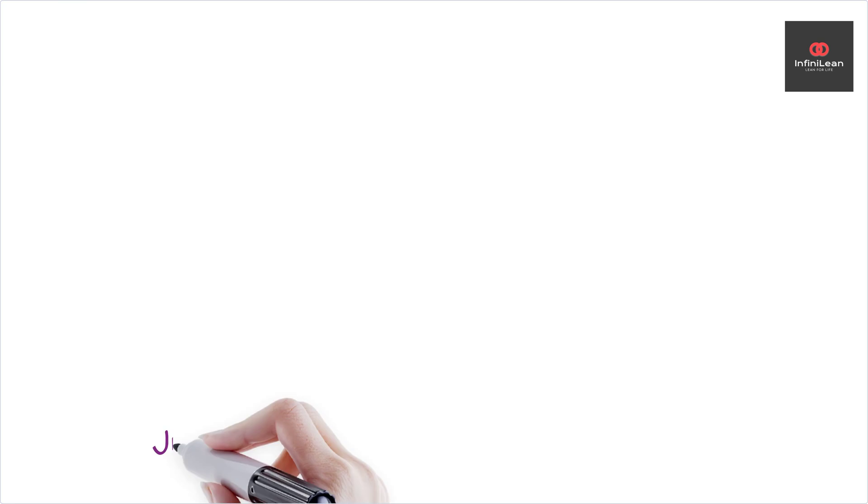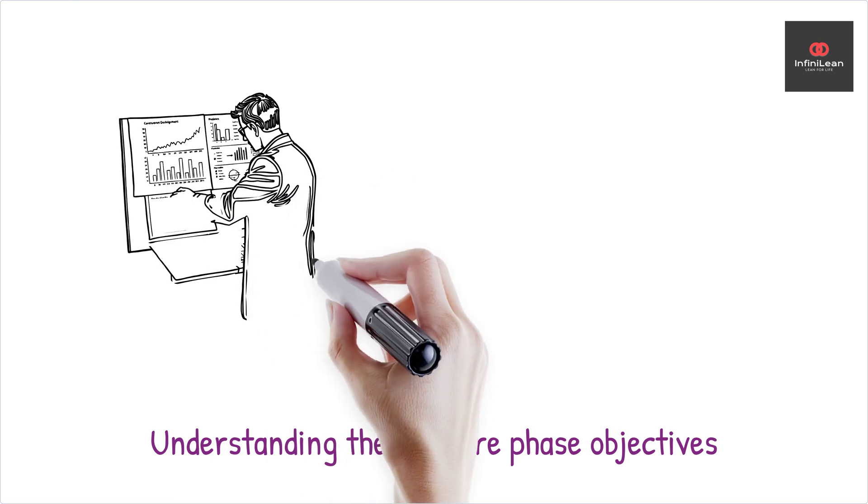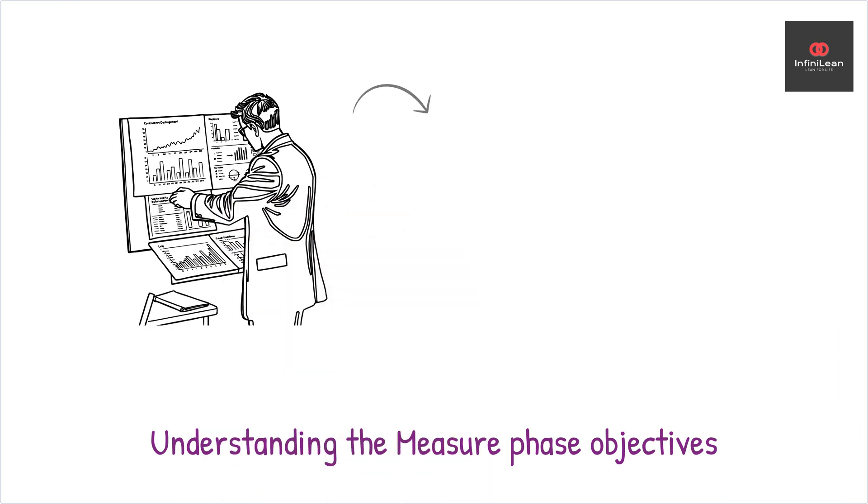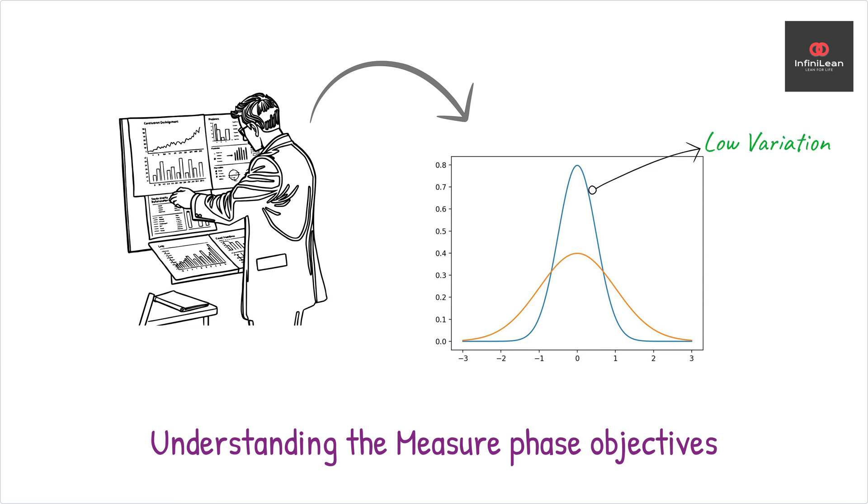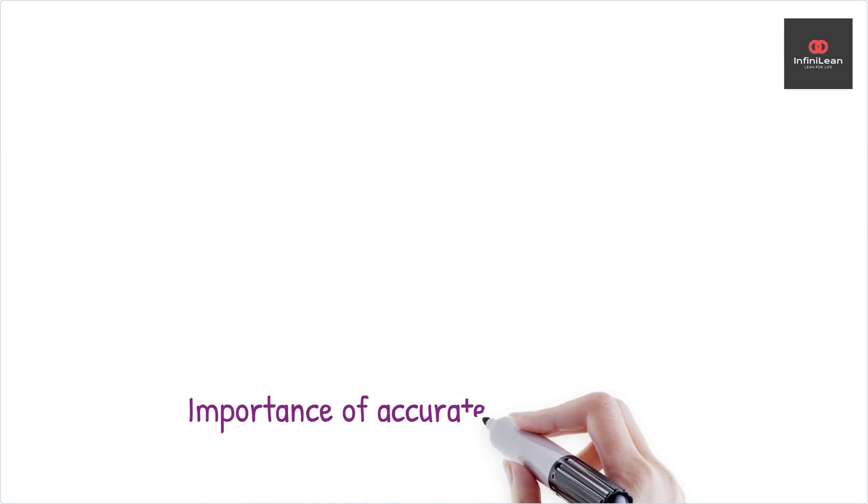The heart of the measurement phase is determining how well the current process performs. This is done by collecting meaningful data that clarifies how much variation exists within the current processes. Precise data collection is vital to start. Any decisions or conclusions drawn in subsequent phases could be flawed without accurate data.